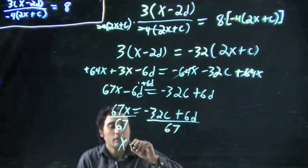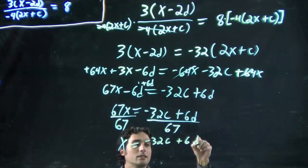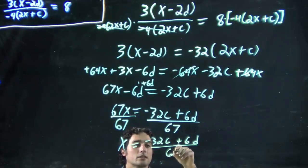So what do we got? x equals minus 32c plus 6d all over 67.